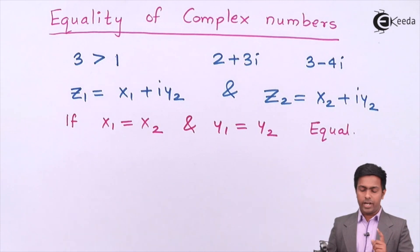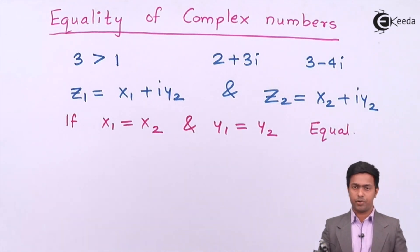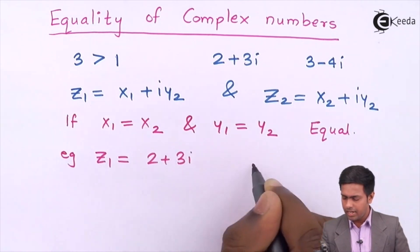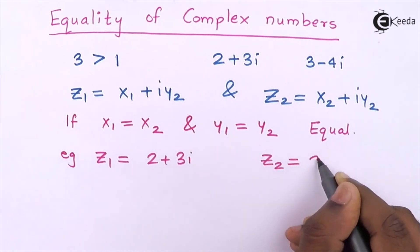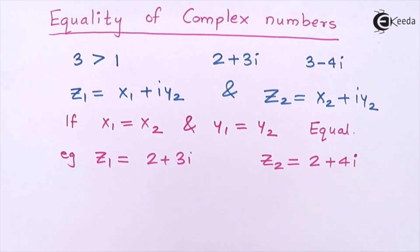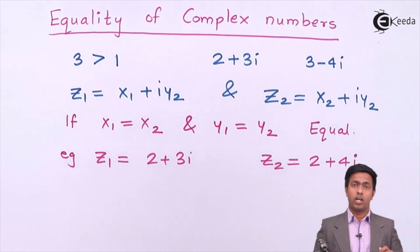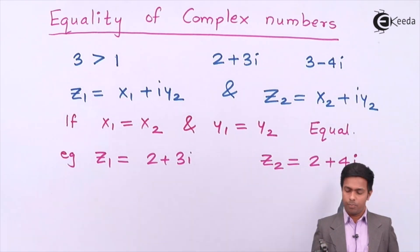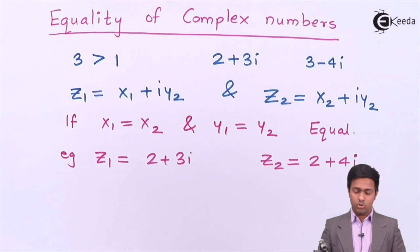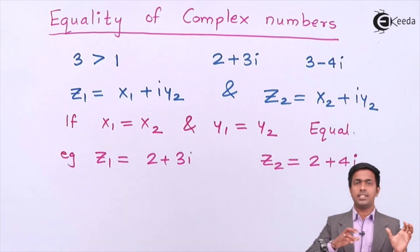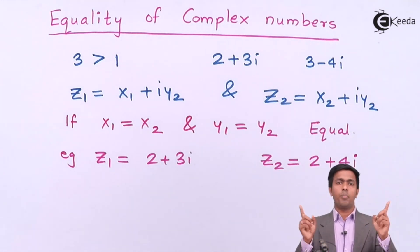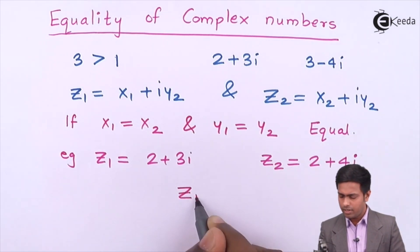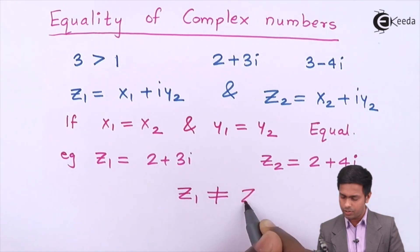Let me take one example to check whether you've understood this concept. I have the first complex number as 2 + 3i and the second as 2 + 4i. Are they the same? The answer is no. The real parts are the same in both, but the imaginary parts are not the same. Since the condition requires both real AND imaginary parts to be equal, we say z₁ is not equal to z₂.